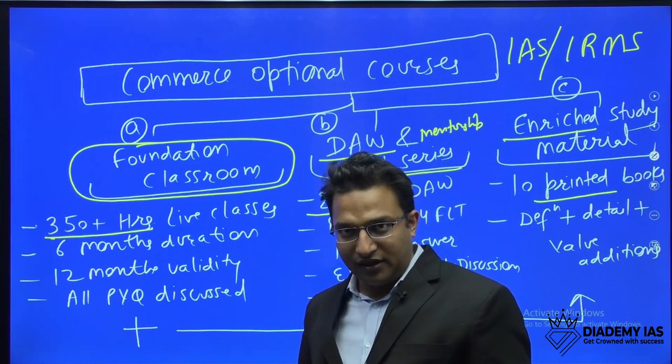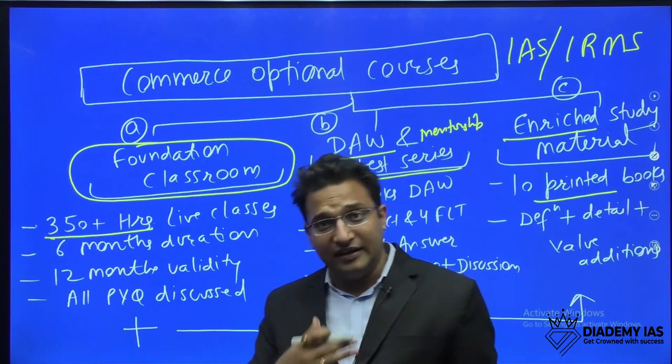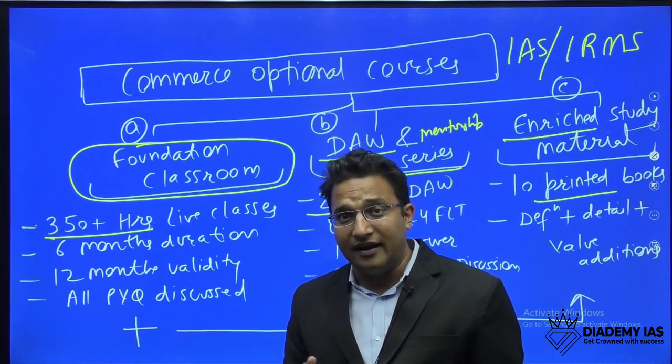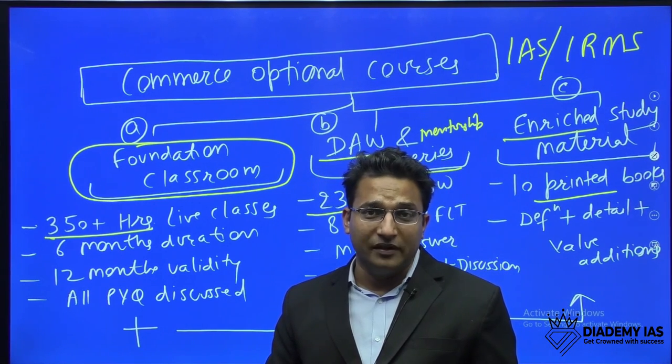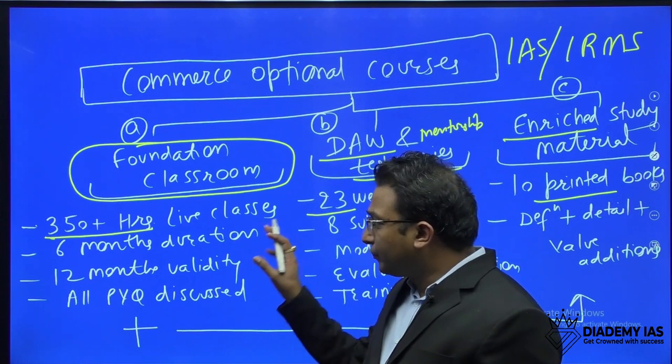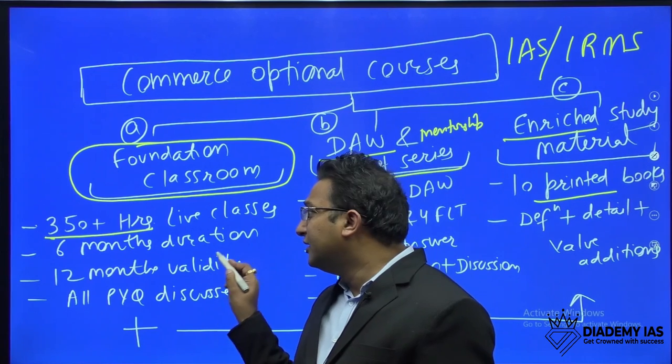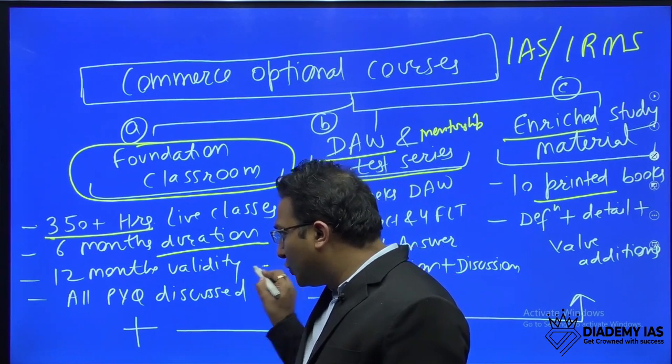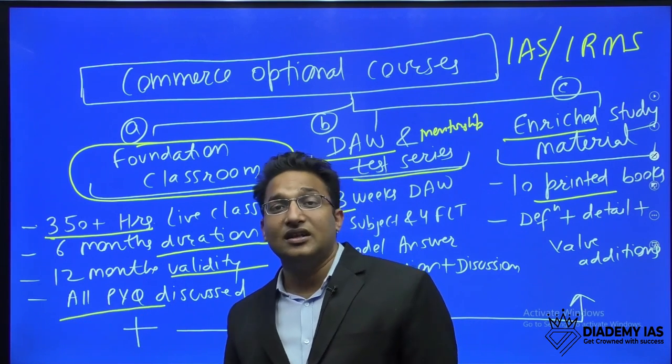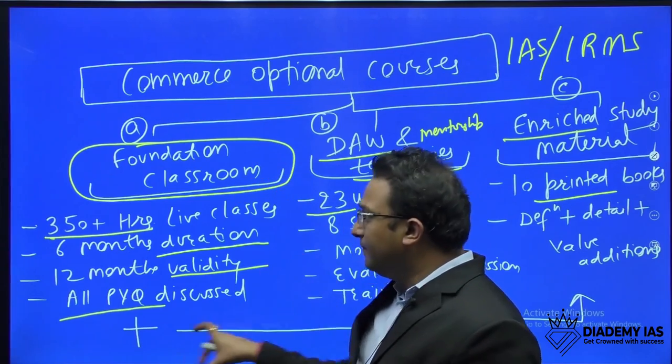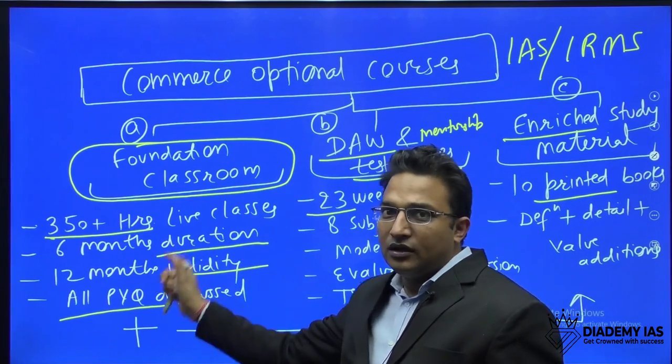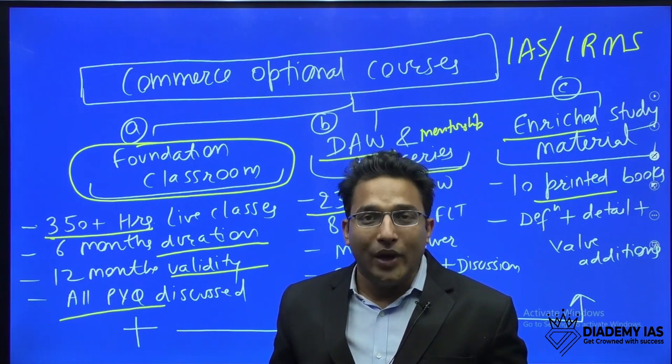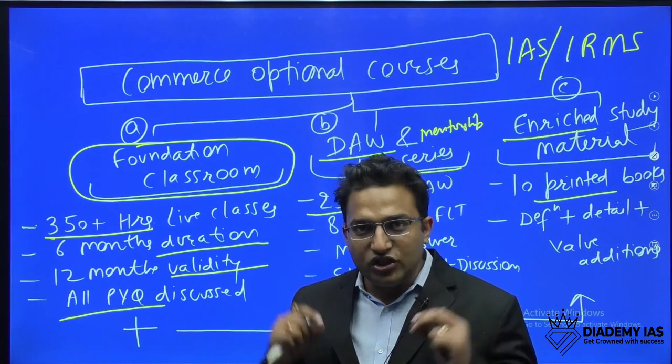The classes will be taken by reputed faculty like me. I am a chartered accountant and I appeared in the UPSC interview three times and appeared in the commerce optional five times. The duration of the course will be six months and validity will be twelve months. All the previous questions will be discussed in the class itself. After attending the classroom program, you are not supposed to do anything else. This is our one-stop solution for your commerce optional for IRMS and for UPSC IAS.